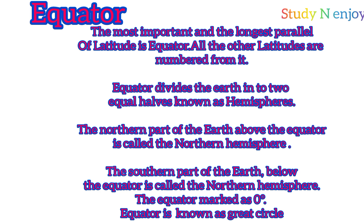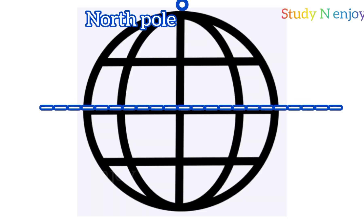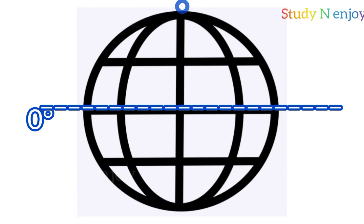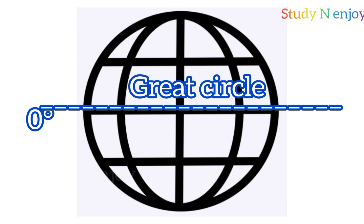The north pole is represented as 90 degrees North, while the south pole is represented as 90 degrees South. The equator is marked as 0 degrees. It is also called the great circle.